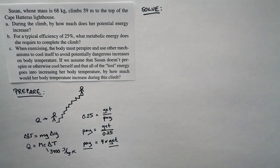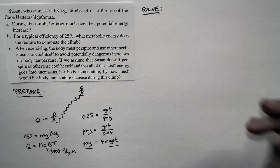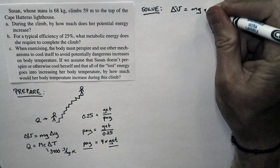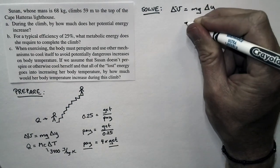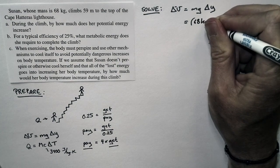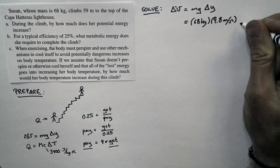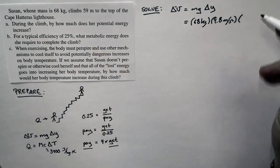First off, we're going to compute the change in potential energy. The change in potential energy is M times G times delta Y. We know her mass. That's 68 kilograms. We know G. That's 9.8 meters per second squared. And we know delta Y is that 59 meters.